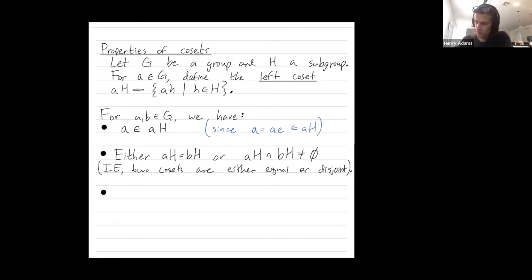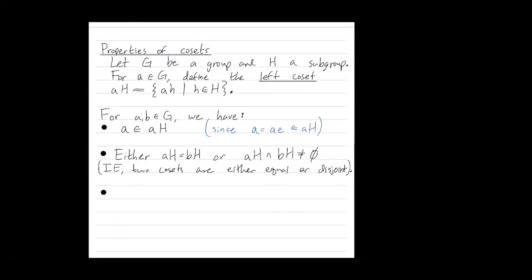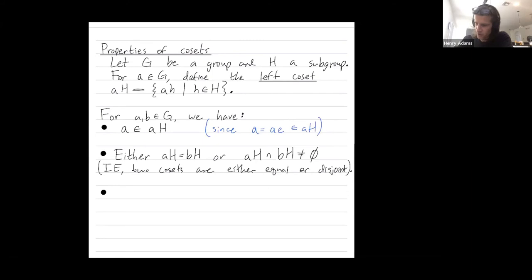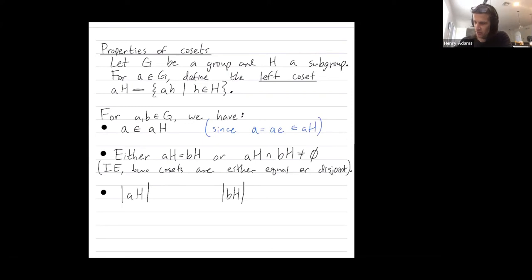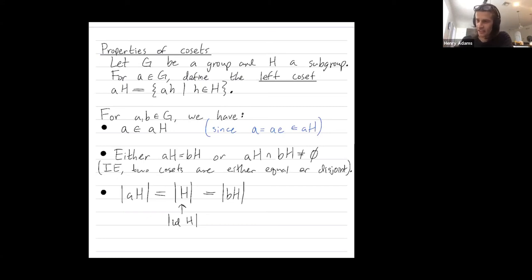The last important property is that the size of any two cosets is equal. So the left coset by a has the same size as the left coset by b. And both of these sizes are just equal to the size of the subgroup H. The subgroup H is the left coset by the identity, if you like.